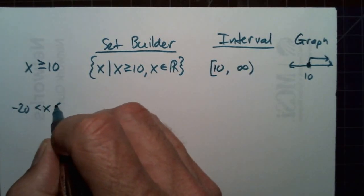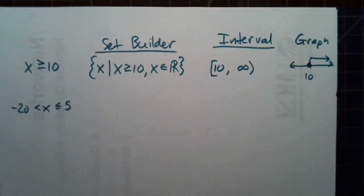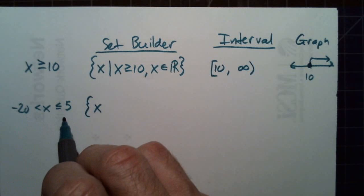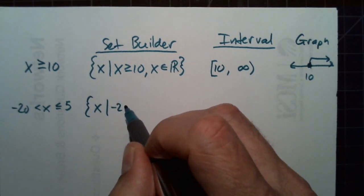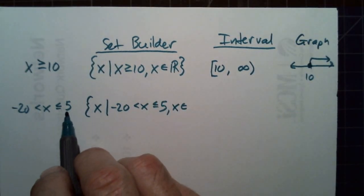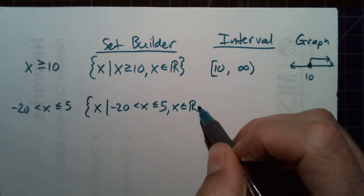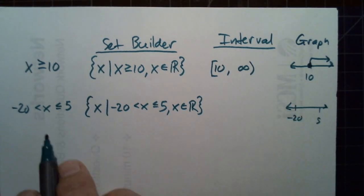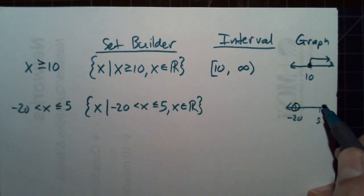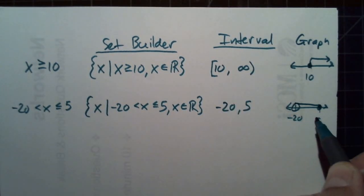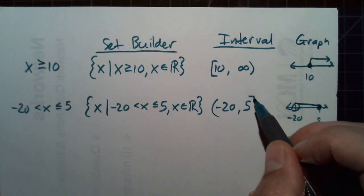For negative 20 is less than x is less than or equal to 5, pause the video and try that one. We have a compound inequality and we can just copy it for the set builder. We want all the numbers between negative 20 and 5, so we're using real numbers. In interval notation it goes from negative 20 to 5 with a parenthesis on negative 20 and a bracket on 5.